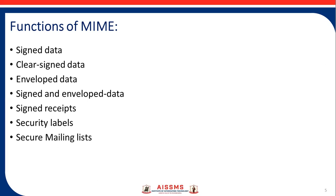Next is signed receipts, which is an acknowledgement of the original message, or a proof of delivery confirming that it will reach the sender. Then security labels are added to the message to identify control access and priority, which increases confidence level. Finally, secure mailing list takes over the processing where per-recipient handling is available when sending a message to multiple users.